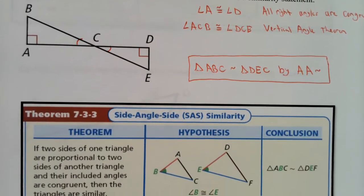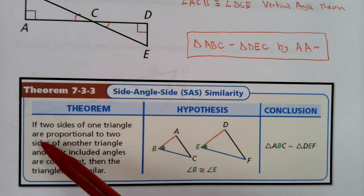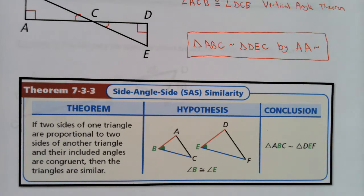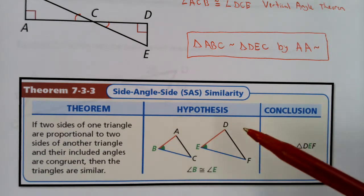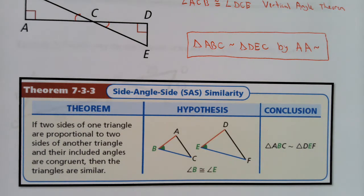Now let's look at the second shortcut: Side-Angle-Side Similarity. This one says if two sides of one triangle are proportional to two sides of another triangle, and their included angles are congruent, then the triangles are similar. So if AB over ED equals BC over EF — meaning if they're proportional and the included angles are congruent — then you can say the two triangles are similar by Side-Angle-Side Similarity.